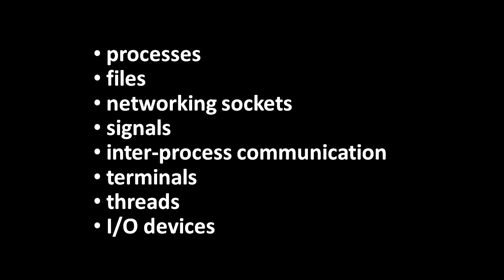Unix systems also have a surprising number of system calls just for dealing with what are called terminals. Terminals and command line shells are something we'll talk about in the next unit. Today's Unixes also have system calls for what are called threads. When a process runs, by default it has one thread of execution — one code pointer and one stack keeping track of all the functions that have been invoked.